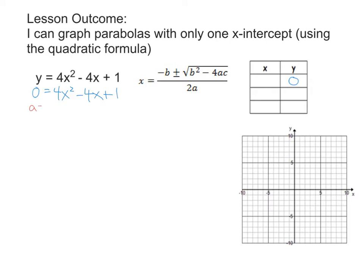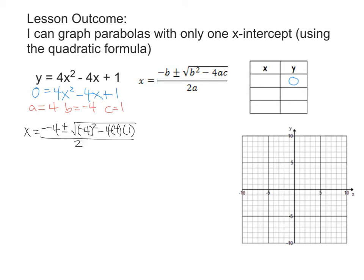I'm going to continue to recommend that a lot of you probably want to write out your a, b, and c values so that you don't make mistakes when putting them into the quadratic formula. So we need to do x equals negative b plus or minus the square root of b squared minus 4 times a times c, all over 2 times a.